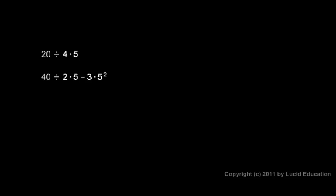Here are a couple more examples. For 20 divided by 4 times 5 — notice that 4 and 5 look closer together on the page, but don't let that trick you. We need to follow the rules: multiplication and division are done left to right. So I do 20 divided by 4 first, which is 5, and then multiply by 5 — that gives 25.